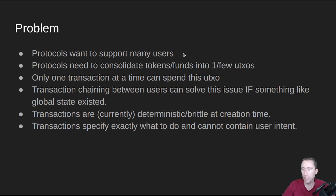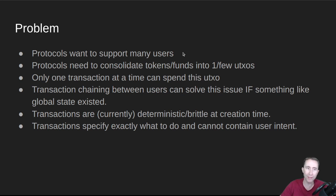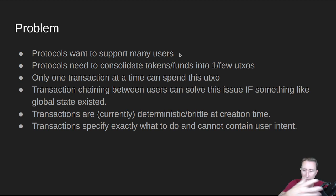A little bit of background — what is the concurrency problem? The idea is that if you have a UTXO sitting out there, it can only be spent by one other transaction. So if multiple people want to spend that, one transaction will succeed and the other will fail. Some protocols, particularly DEXes or things with a lot of concurrent users, need to consolidate tokens or funds into one or very few UTXOs. You can't have a smart contract look at 2,000 different UTXOs to figure out the current state without contention — you'll constantly be rebuilding your transaction because somebody else causes it to fail.